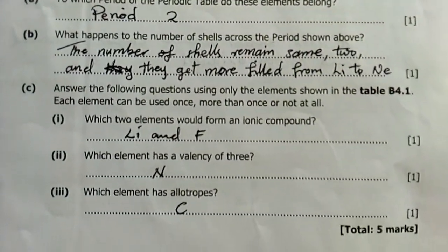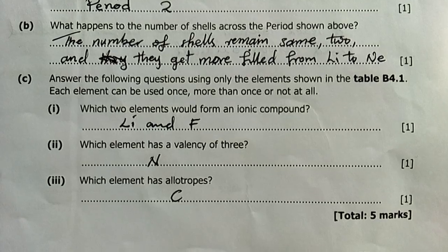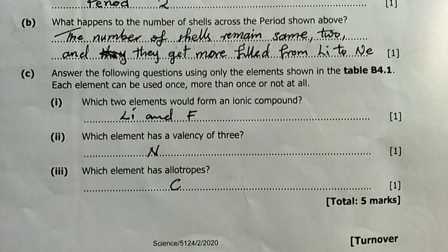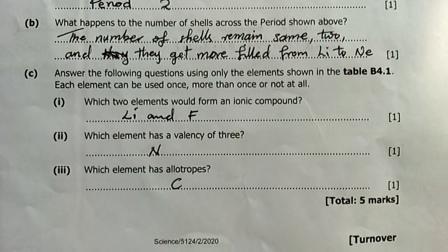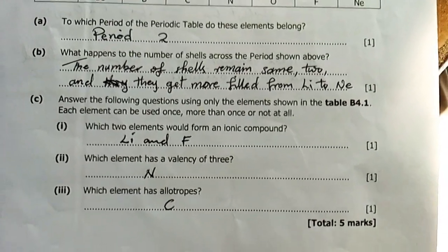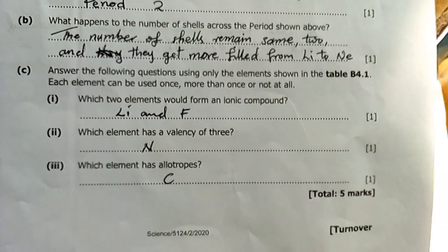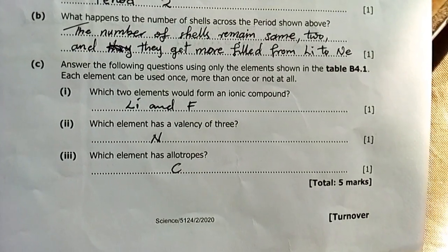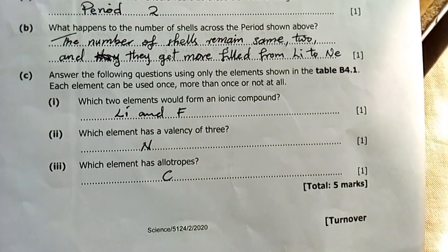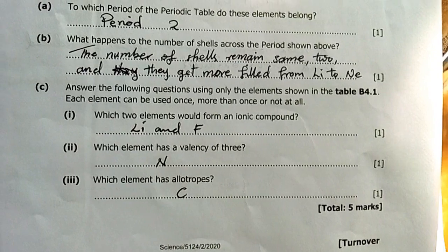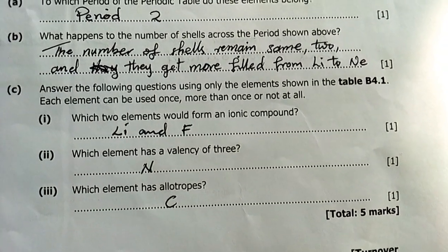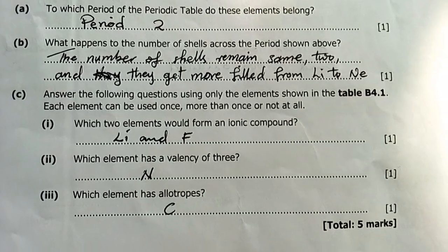Question C: Answer the following questions using only the elements shown. Which two elements would form an ionic compound? Lithium and fluorine, forming lithium fluoride. Which element has a valency of three? Nitrogen from group 5. Which element has isotopes? Carbon—there's carbon-12, carbon-14, and carbon-11. We've scored five marks.